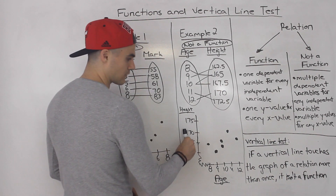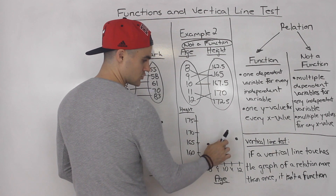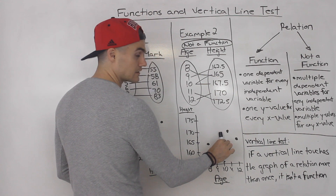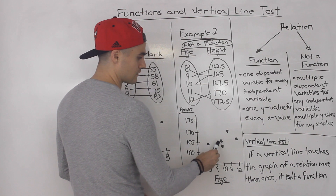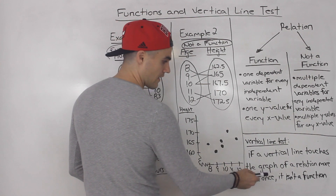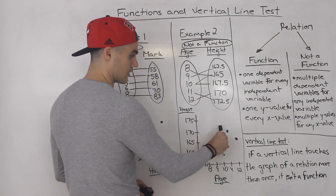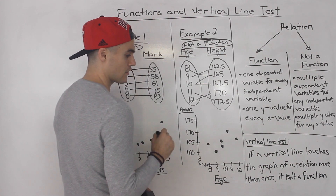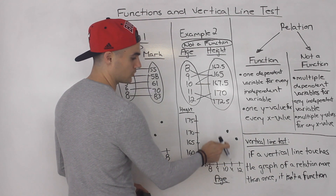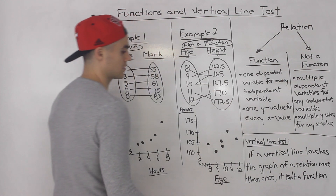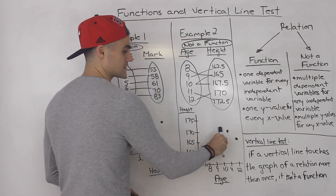But if we run a vertical line through example two's relation, notice that at the point x equals ten, two points are touching the vertical line. You can't have two points touching the vertical line. If there is more than one point touching the vertical line on the graph of a relation, then you know it is not a function, because that independent variable has multiple dependent variables. So that's how you can see it visually — that's the vertical line test. If it touches two points, it fails the vertical line test and it is not a function.